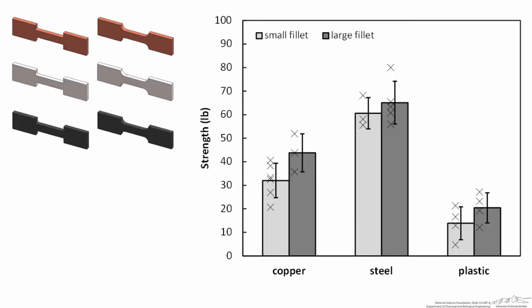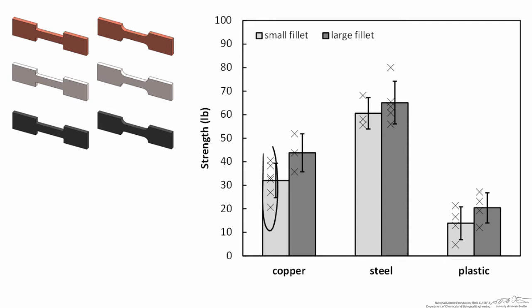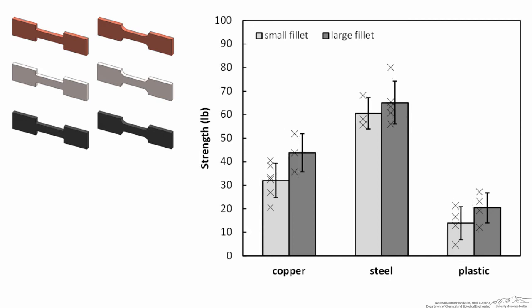Once you've confirmed that all the experiments were run correctly and none of the samples were damaged before measuring, always look at the data graphically. Here I've plotted the force needed to break each sample, the material, and whether it had a small or large fillet. In each case, the actual data points are shown along with the mean value for each bar, plus or minus one standard deviation as error bars. This allows me to see at a glance that the steel samples are likely stronger than the plastic samples and likely stronger again than the copper samples. There's also a chance that the large fillet makes the sample stronger, but that's not entirely obvious because we see overlapping data points.